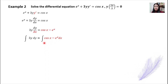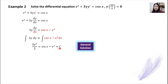Now integrate both sides. For the left-hand side, integrate with respect to y to get 3y squared over 2. For the right-hand side, integrate with respect to x: cos x gives sine x, and e^x gives e^x, with plus c on the right-hand side. This is the general solution for this example. But because we have an initial condition, we must continue.